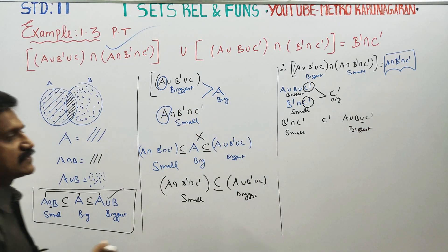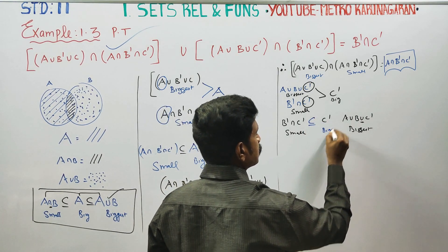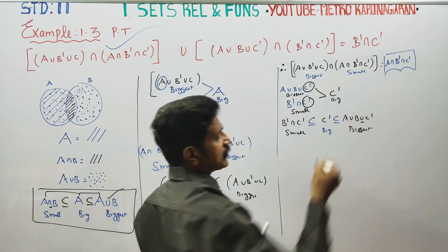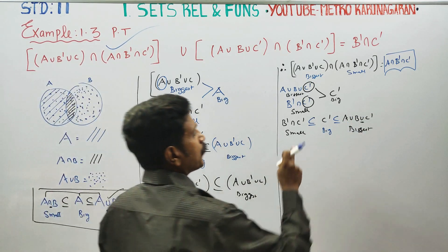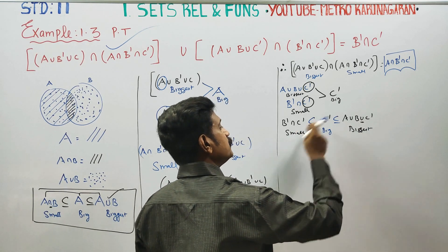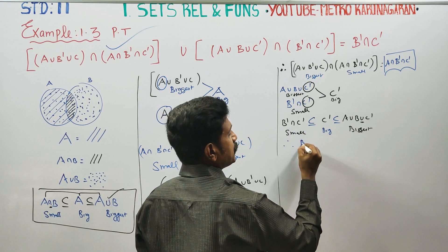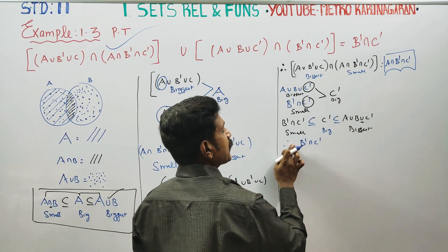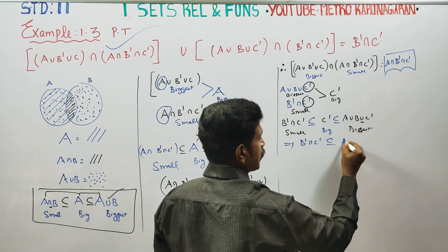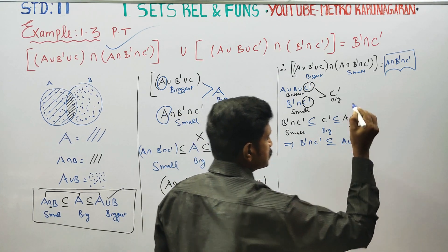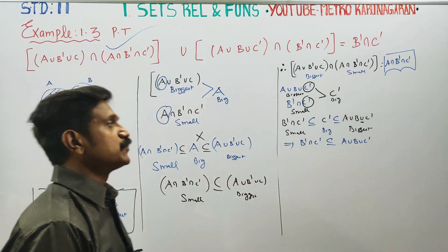Small will be a subset of the big one, and big will be the subset of the biggest. Even the subset — even the subset — up a smaller to biggest. Therefore, B intersection C' is a subset of A union B union C'.